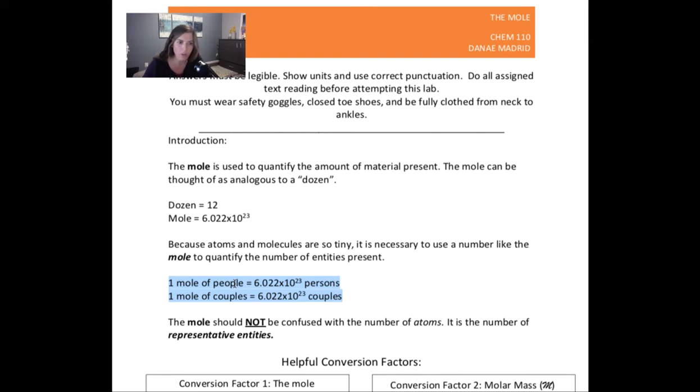So if you are talking about a mole of people, that means you have that number, this huge number of persons. But if I'm talking about a mole of couples, so two people are in a couple, that means I have that number of couples. But the number of people would be this number times two, right? Because there are two people for every one couple.